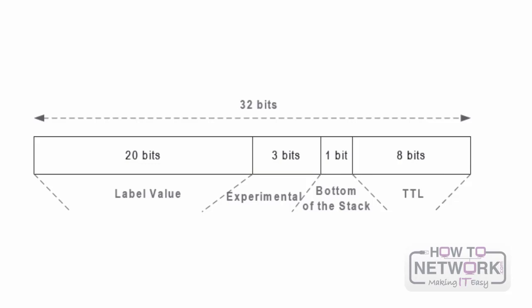The MPLS label has a length of 4 bytes and consists of the following fields: a 20-bit label value field, a 3-bit experimental field such as QoS marking, a 1-bit bottom-of-stack field which can be used when multiple labels are used and is set to 1 for the last label in the stack, and an 8-bit TTL field.